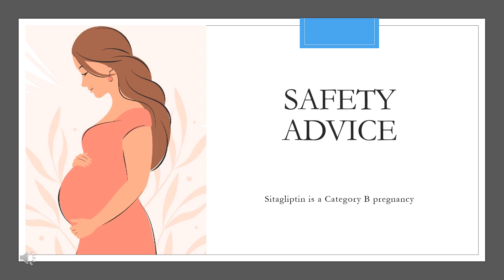Safety Advice — Pregnancy Category B: Reproduction studies have been performed in rats and rabbits. Doses of citagliptin up to 125 mg/kg, approximately 12 times the human exposure at the maximum recommended human dose, did not impair fertility or harm the fetus.